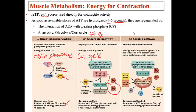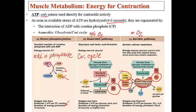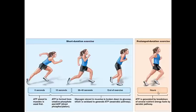Aerobic exercise means with oxygen. The great thing about it is it can use multiple sources of substrates — not only glucose, but also fatty acids and amino acids. The key here is oxygen and the presence of mitochondria, which is the powerhouse of the cell. This is the type of energy produced for marathon runners, who can sustain a long duration of exercise.